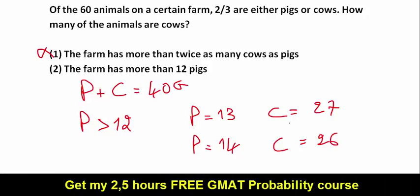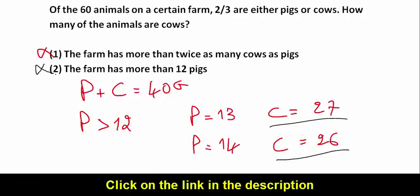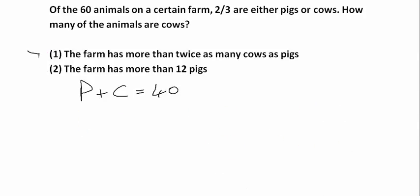So now here also I have two examples. So this statement is not sufficient to determine the number of cows in this farm. So now I will combine both statements together. So P plus C is equal to 40. The first one, if you remember the conclusion, it was P less than 13.3.